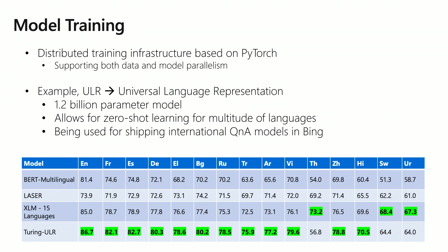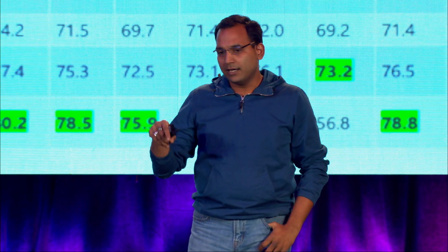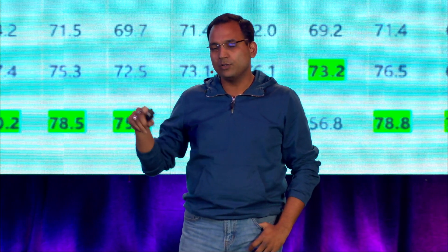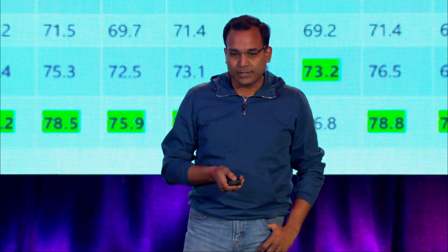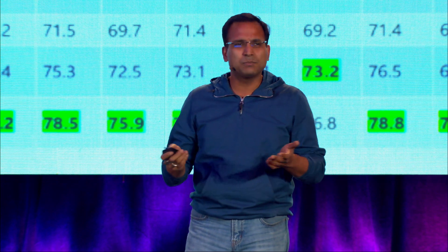ULR is along the same lines as BERT multilingual or LASER — the idea is to project different languages into the same subspace, and if you are able to do that and intermingle enough, you can do zero-shot production scenarios for multilingual use cases. This is being used for shipping international Q&A models without using any training data for question answering in international languages, and it is in production for Bing. On standard benchmarks like XNLI, these are the numbers — the last five columns are low-resource languages where the model performs less well, but this model supports 100-plus languages.